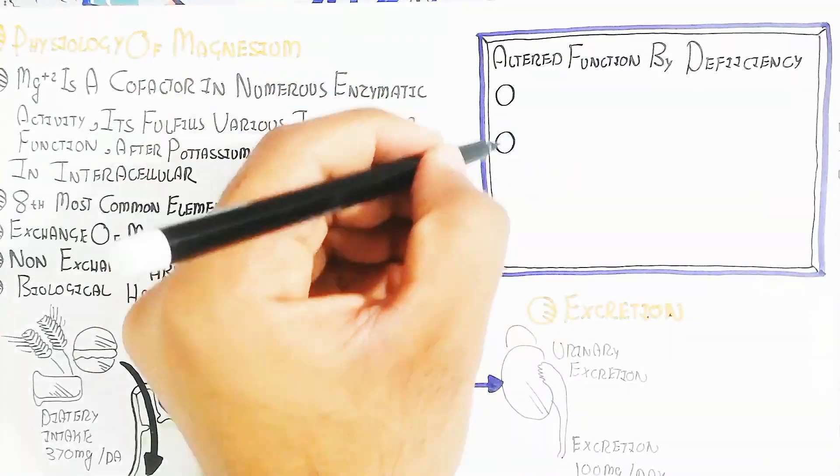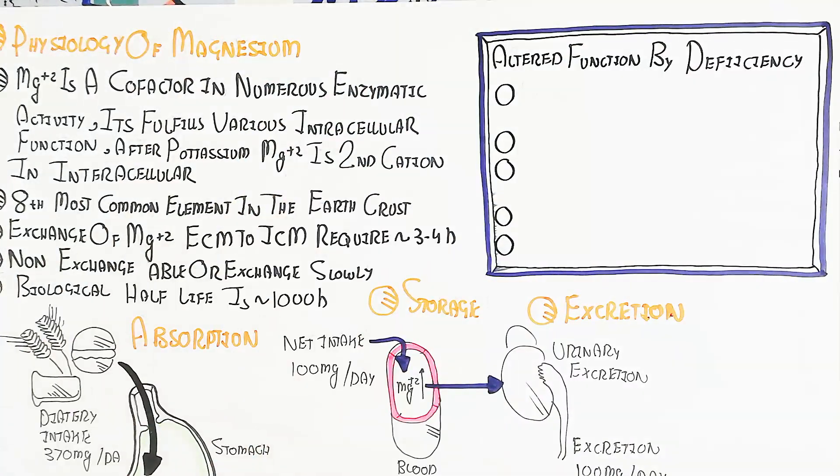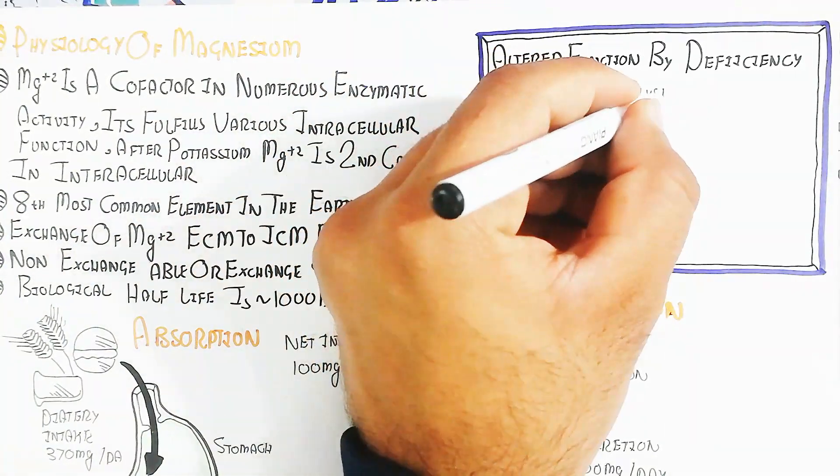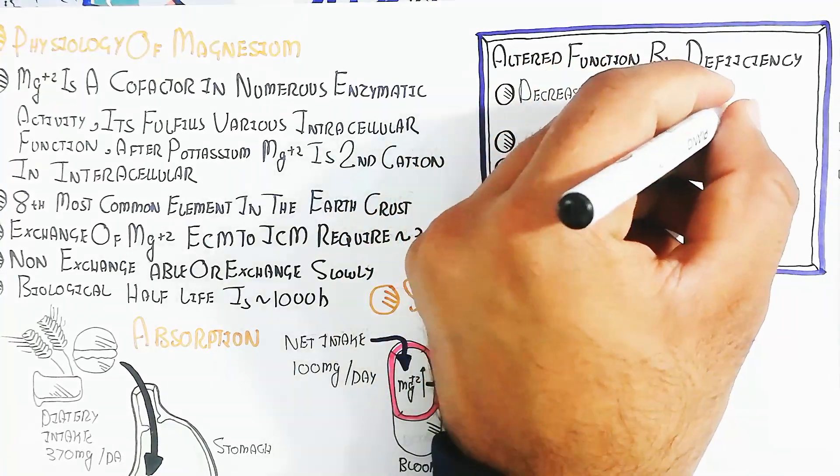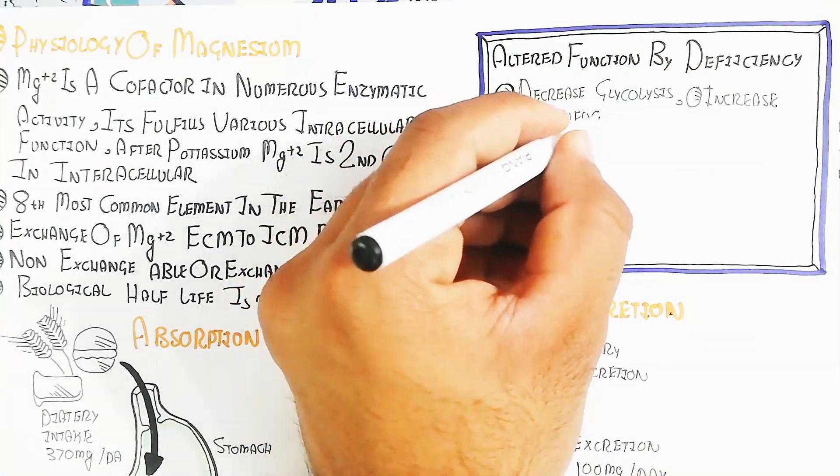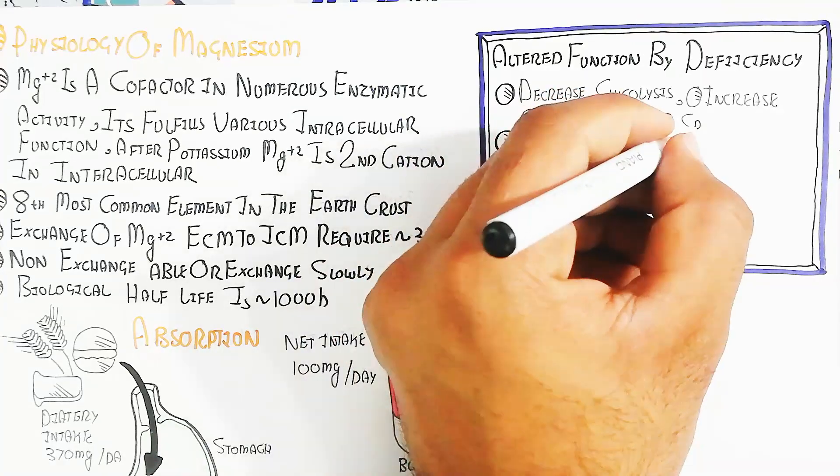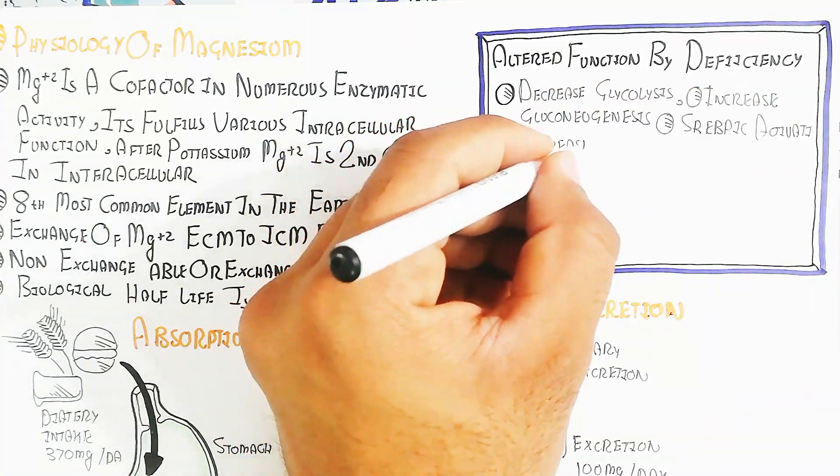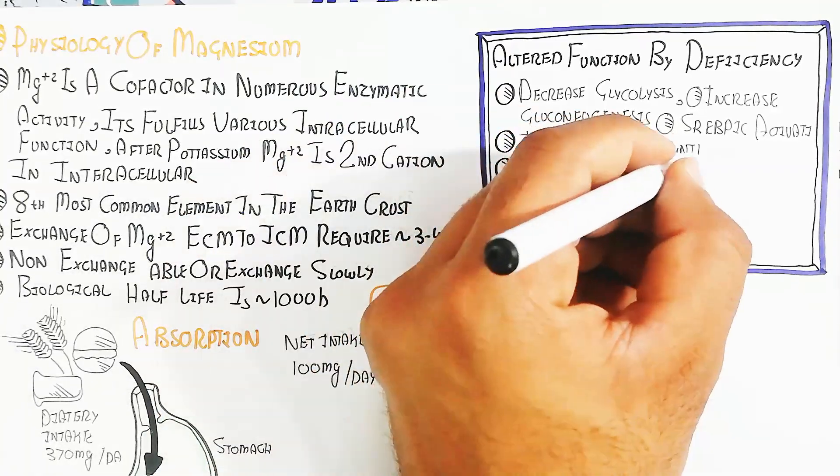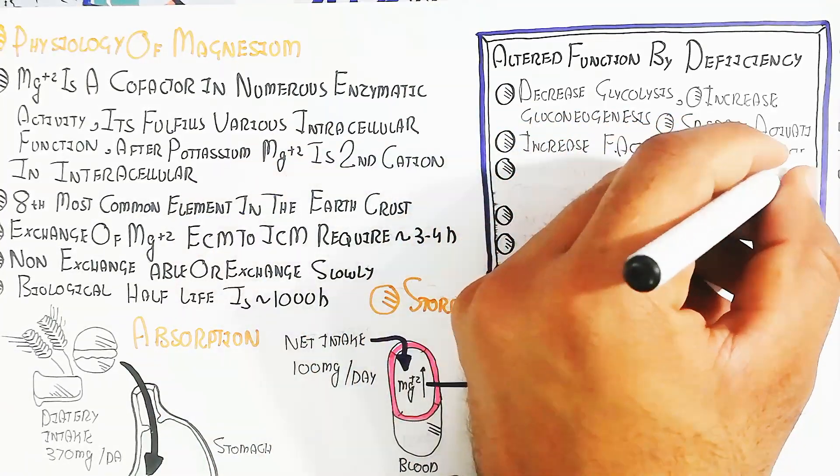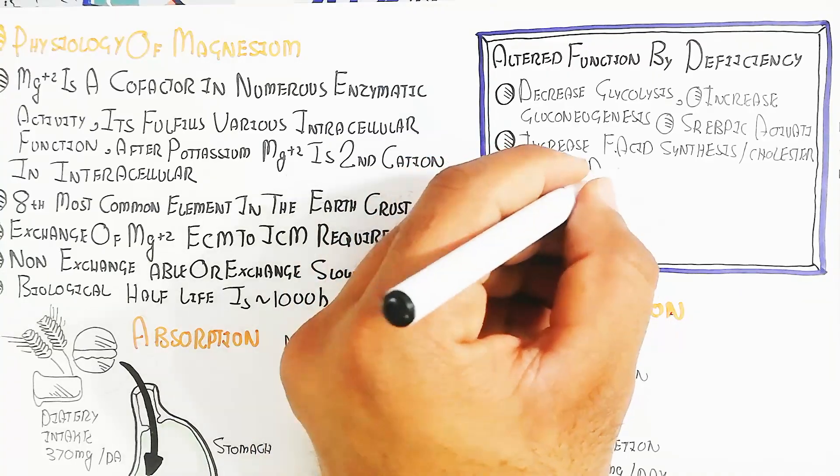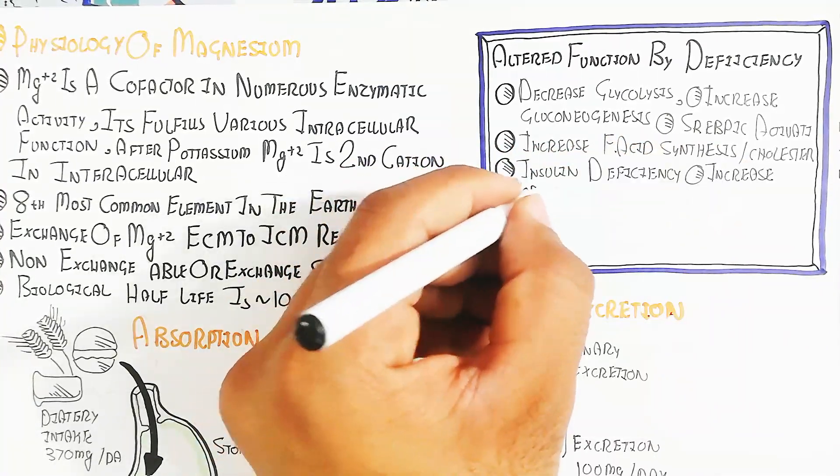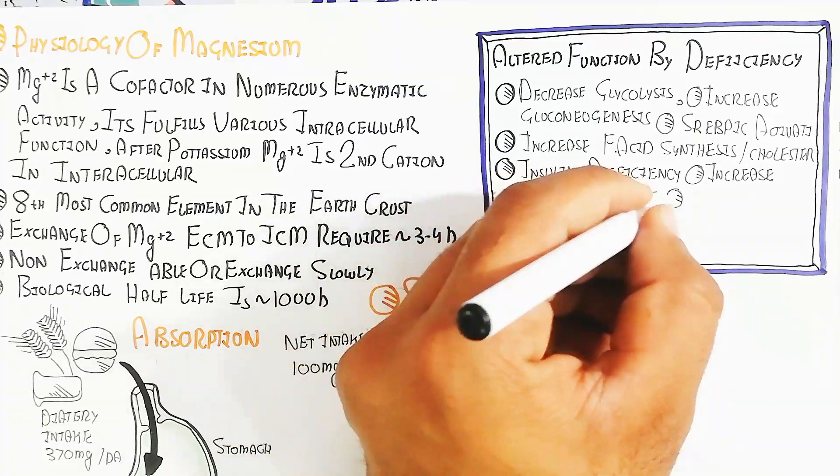Let's understand altered function with deficiency. Decreased glycolysis occurs due to magnesium deficiency and increased gluconeogenesis. Increased glucose can cause problems like type 2 diabetes mellitus. SREBP1C gene activation increases, along with free fatty acid synthesis and cholesterol, leading to hypercholesterolemia and hyperlipidemia.